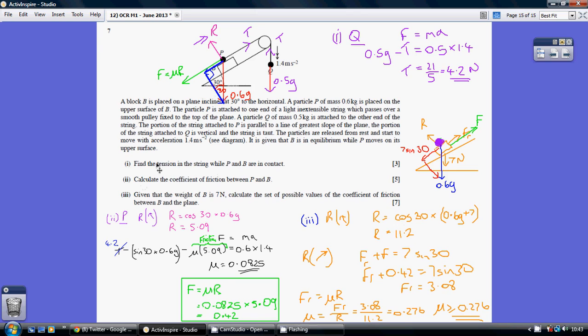So for part 1 to find the tension in the string, let's just focus upon Q only. Considering Newton's second, F equals MA, so our net force, well we're moving downwards here, so our force downwards is greater than the tension.